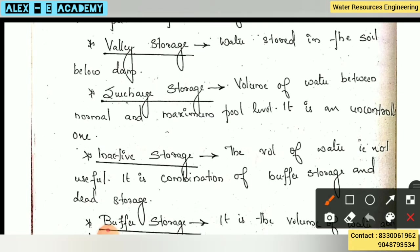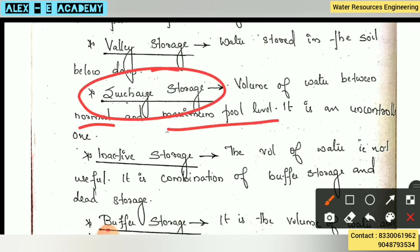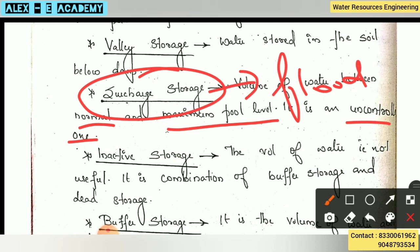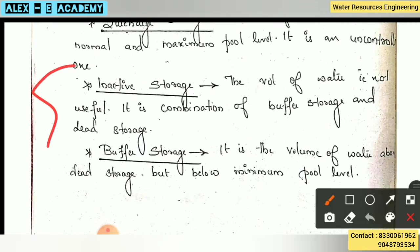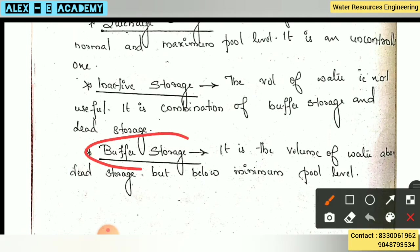Next is surcharge storage — the volume of water between the normal and maximum pool level. That is the storage above the normal pool level. It is uncontrolled. When flood occurs, the surcharge storage will be released. The level difference between the normal pool level and maximum pool level is the buffer storage.